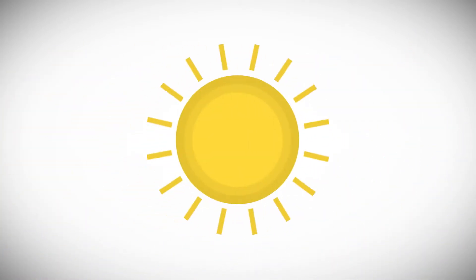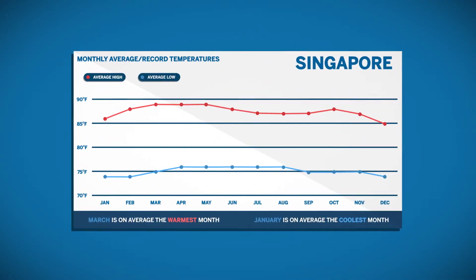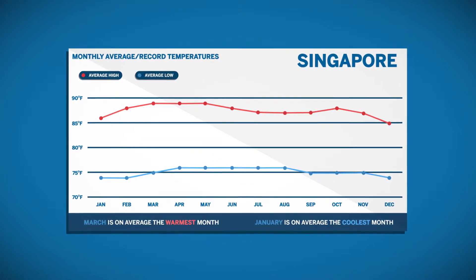To explain by example, let's look at temperature changes that may occur in different parts of the world. In Singapore, the temperature swings over the course of a year only vary by 15 degrees from the coldest temperature to the hottest.